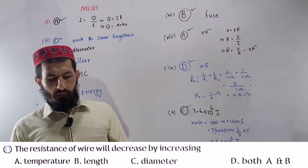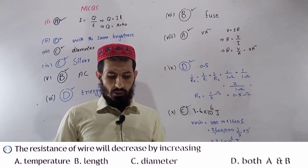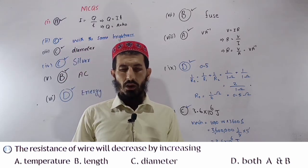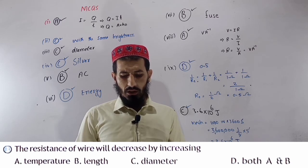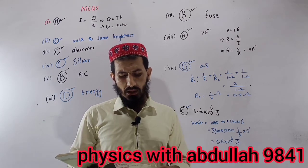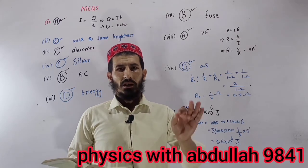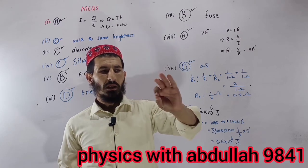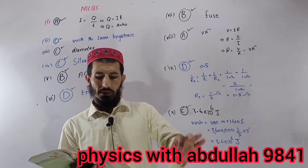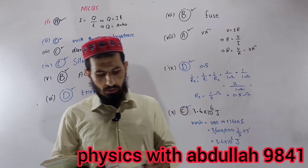The third question: the resistance of wire will decrease by increasing what? The resistance of wire will decrease by increasing the diameter. When diameter increases, the cross-sectional area increases, so resistance decreases. The answer is C.